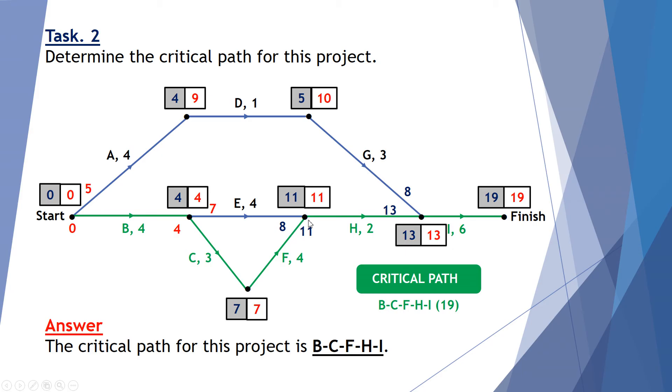So 11 plus 2 gives me 13, earliest of 13, latest of 13 and then another 6, earliest of 19, latest of 19. So our critical path is B, C, F, H and I.